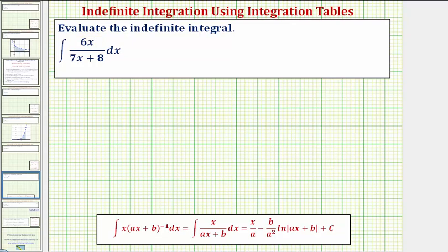Let's go ahead and factor that six out and write this as six times the integral of x divided by the quantity seven x plus eight, integrated with respect to x.